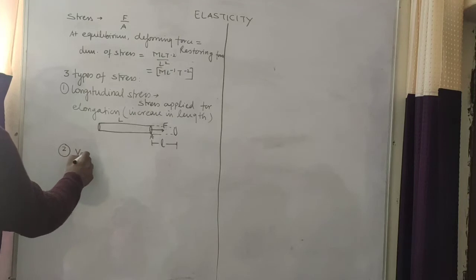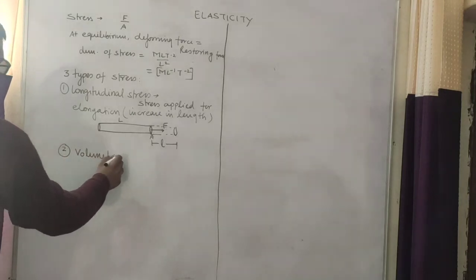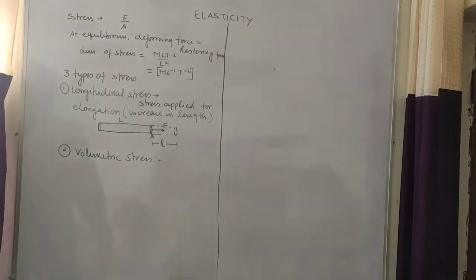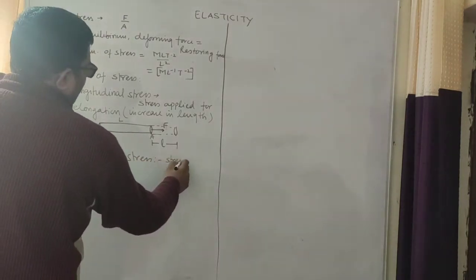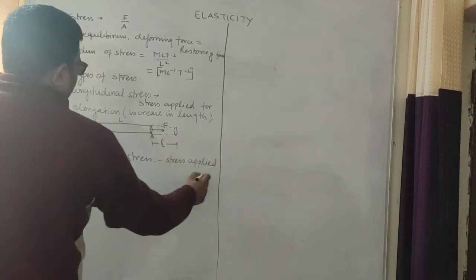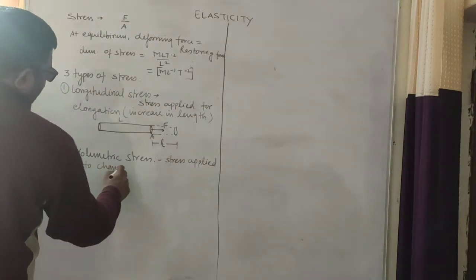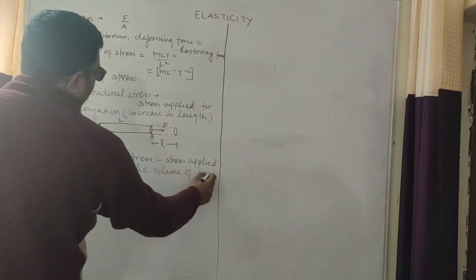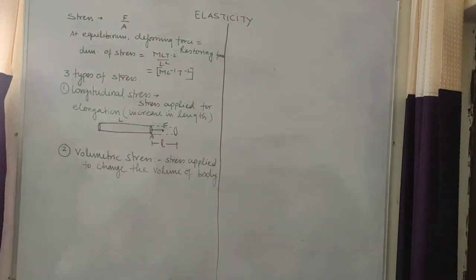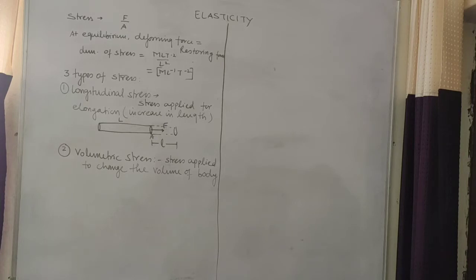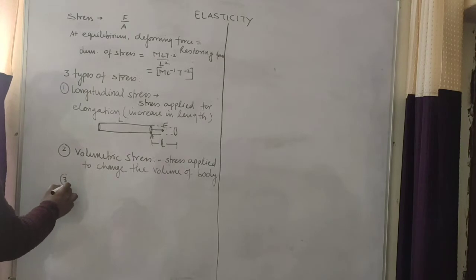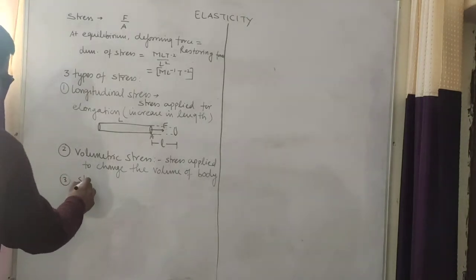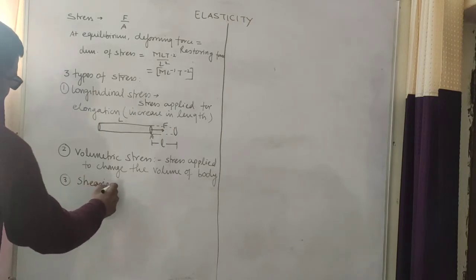The second type is volumetric stress. Volumetric stress is stress applied to change the volume of a body — whether it is a gas or a liquid. It is used only for changing the volume of a liquid or gas. It has the same unit and dimension as longitudinal stress.